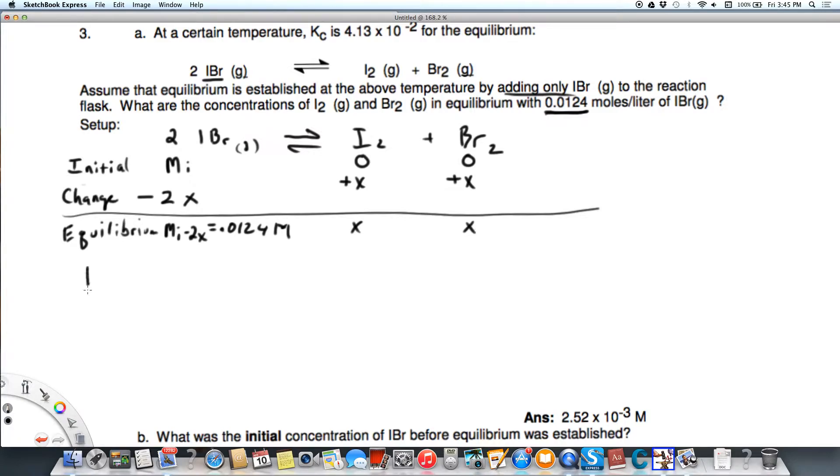So now we can set up our equilibrium expression. Kc is going to equal I2 times Br2 over IBr, the quantity squared.